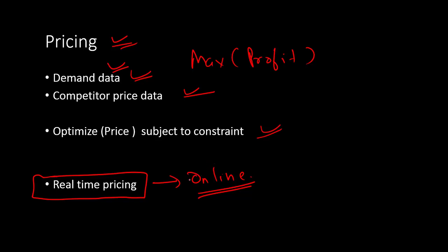A popular example of real-time pricing is how airlines price tickets — it's more real-time, based on your travel date, current demand, and so on.